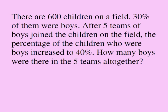We're going to solve this problem visually using the modeling approach. Originally we had 600 children and 30% of the children were boys, which means 70% of the children were girls. A bunch of boys joined, but the total number of girls did not change. After the boys joined, the percentage of boys became 40%, meaning there were 60% girls after the boys joined.